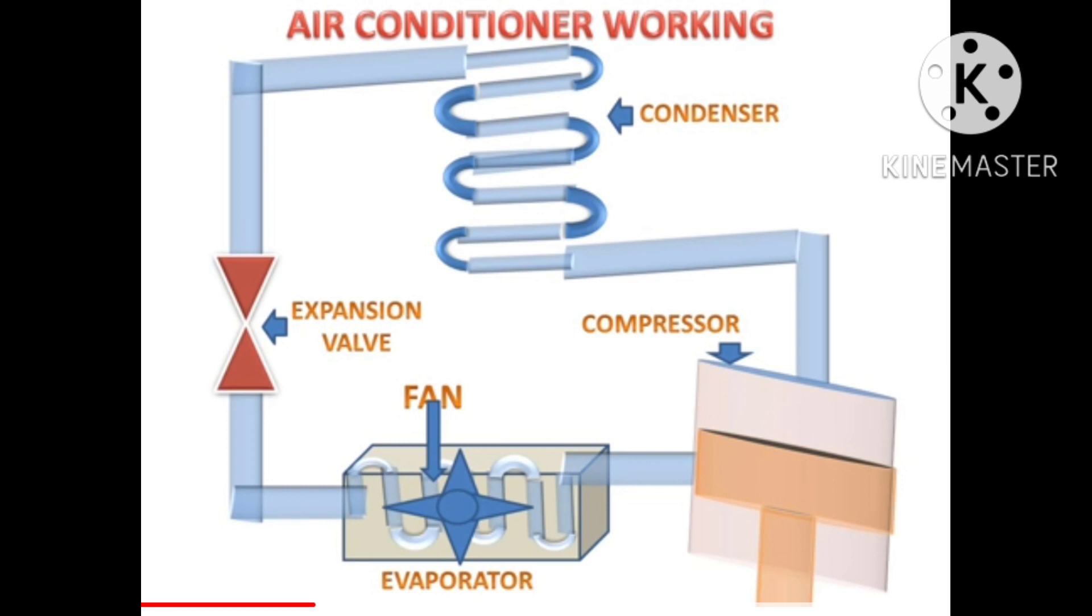The window AC which we use at home has basically four main components. First one is compressor, then condenser, expansion valve, and the fourth one is evaporator.